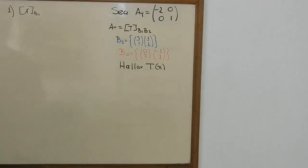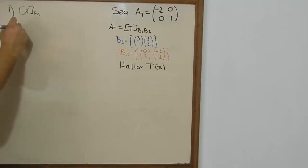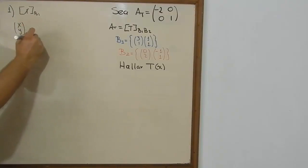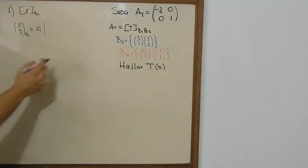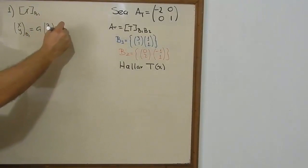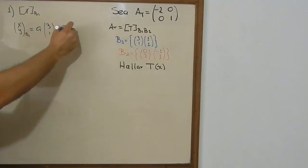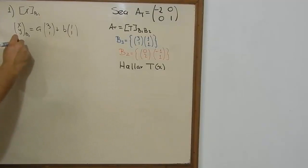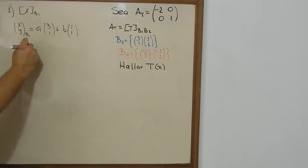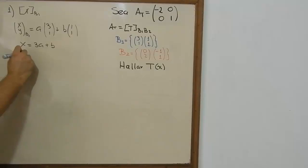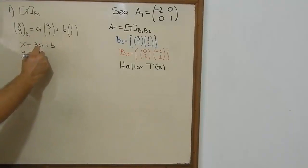First of all, we need to find this vector on base 1. We're going to call this vector (x, y) on base 1, which will be equal to a constant a times the first vector of base 1 plus a constant b times the second vector of base 1. We need to find the values of a and b.